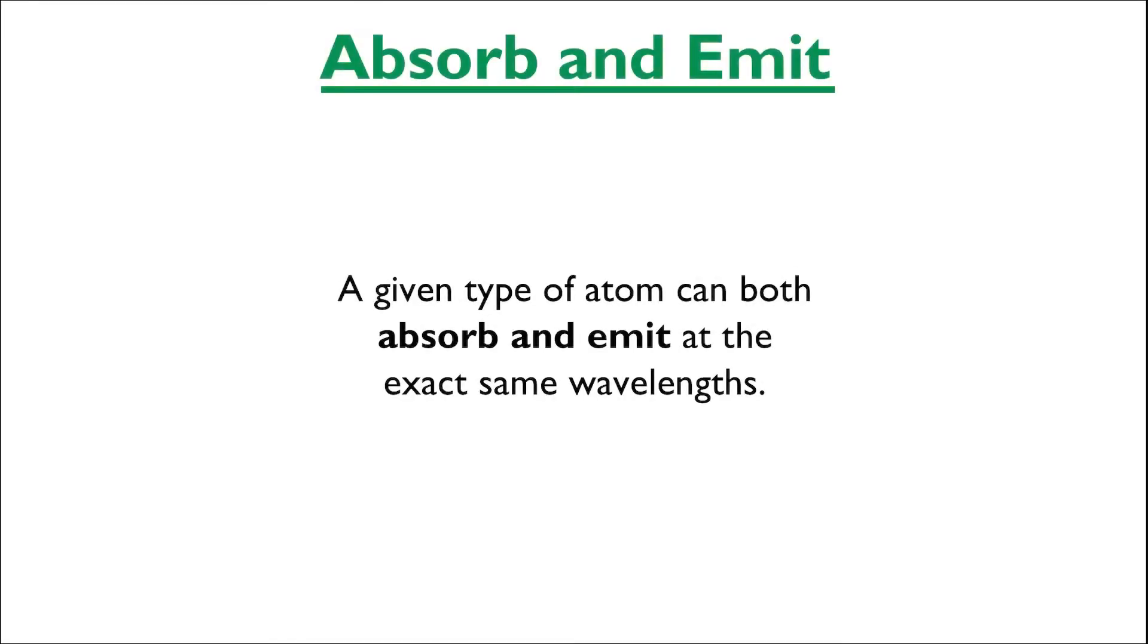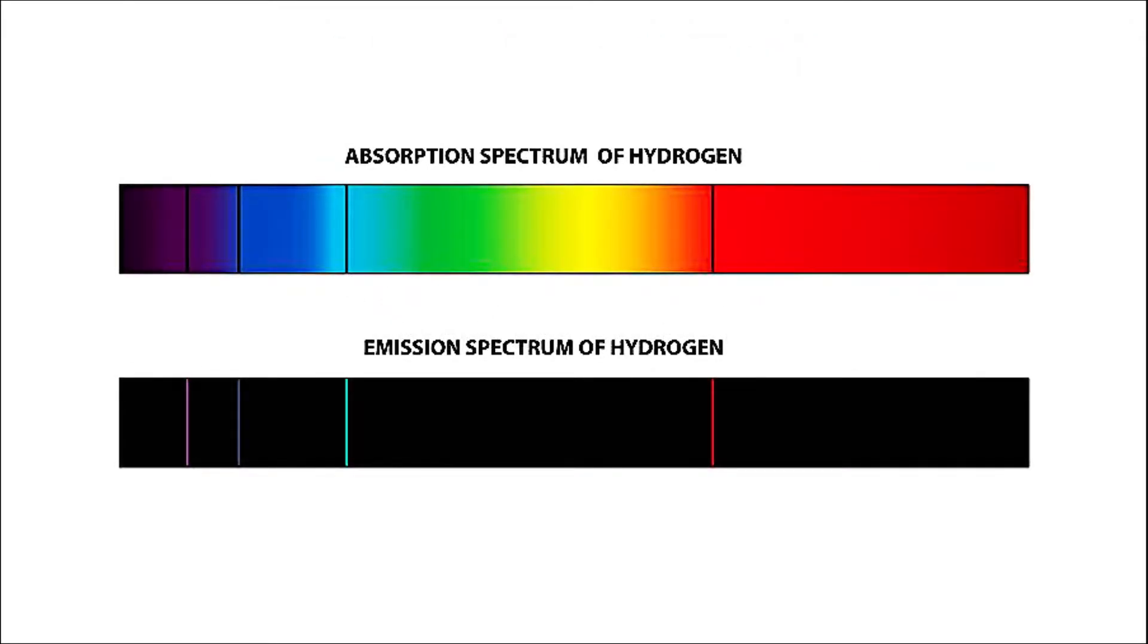An atom of any given element can absorb light at specific wavelengths and emit light at those same wavelengths too. This concept can be seen here in comparing the absorption and emission spectra of hydrogen, where we can see the placement of the emission lines match the locations of the absorption bands.